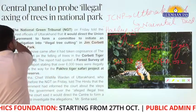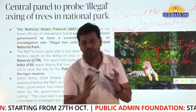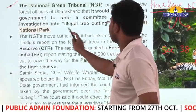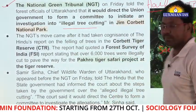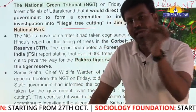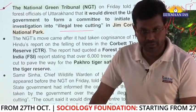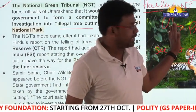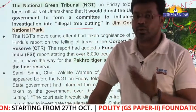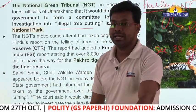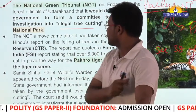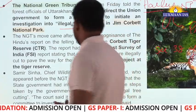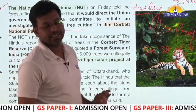The National Green Tribunal has directed the union government and forest officials to form a committee to initiate investigation into illegal tree cutting in Jim Corbett National Park. A reporter approached the National Tiger Conservation Authority with a complaint about illegal felling of trees. The NGT has told Uttarakhand forest officials to conduct an investigation.